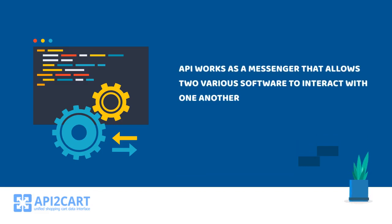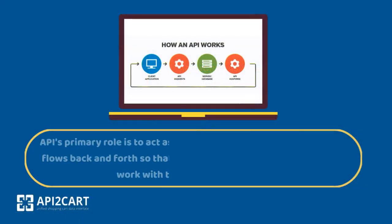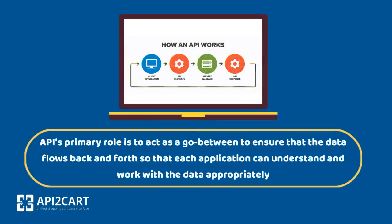API works as a messenger that allows two various software to interact with one another. API's primary role is to act as a go-between to ensure that the data flows back and forth so that each application can understand and work with the data appropriately.